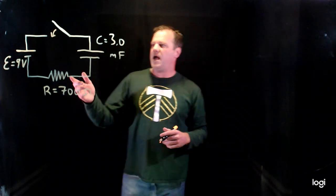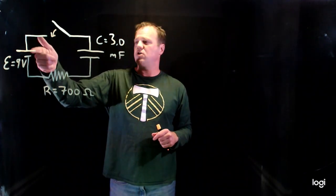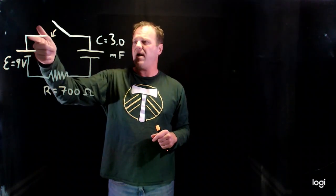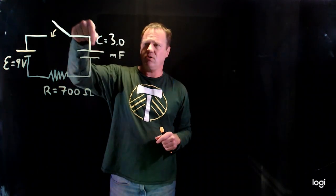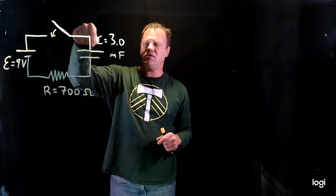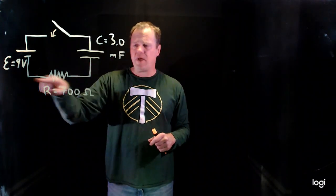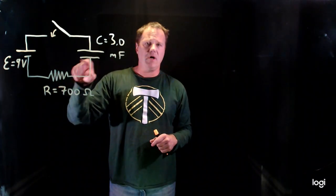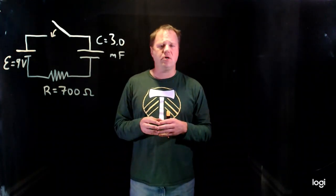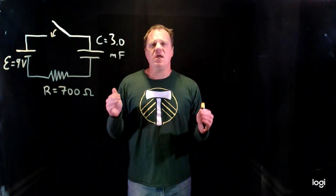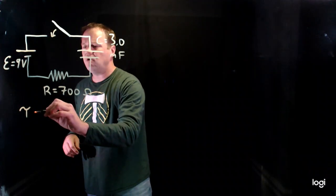What will happen is our fictitious positively charged current will flow out of the positive side of the battery, go through the wire, and start to charge the capacitor. We'll get a buildup of positive charge on one side and negative charge on the other side, and current will flow through the resistor. An important parameter for all RC circuits, whether charging or discharging, is what's called a time constant. We use the Greek letter tau for that.